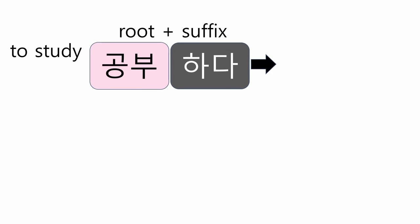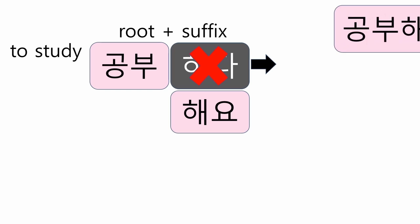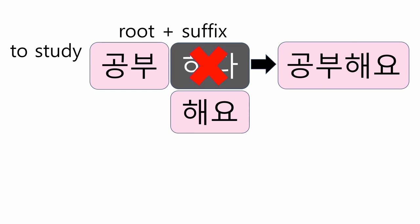Let's look at the verb 공부하다, meaning 'to study.' 공부 is a noun meaning 'study,' and the suffix 하다 is added to form the verb 공부하다. First step: remove 하다 — remember to delete the entire 하다, not just 다. Second step: attach 해요. So the final form becomes 공부해요. You just need to change 하다 to 해요 automatically.